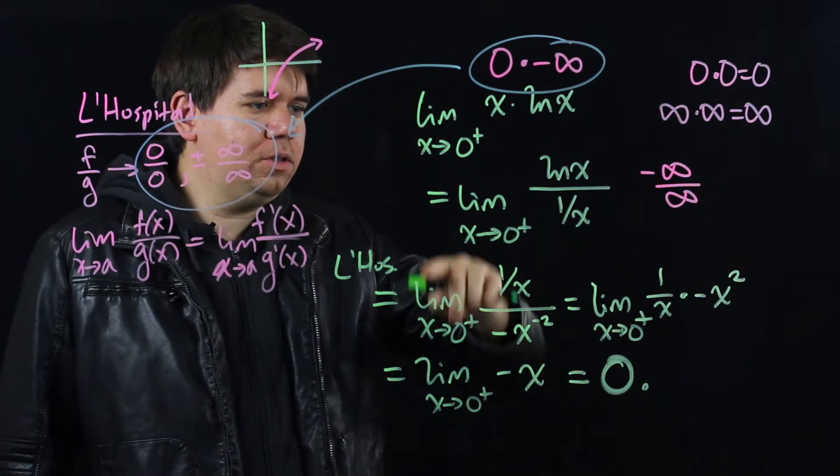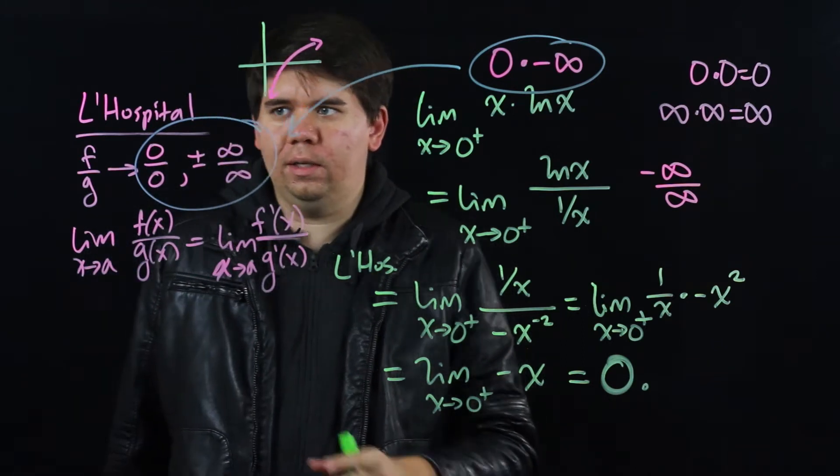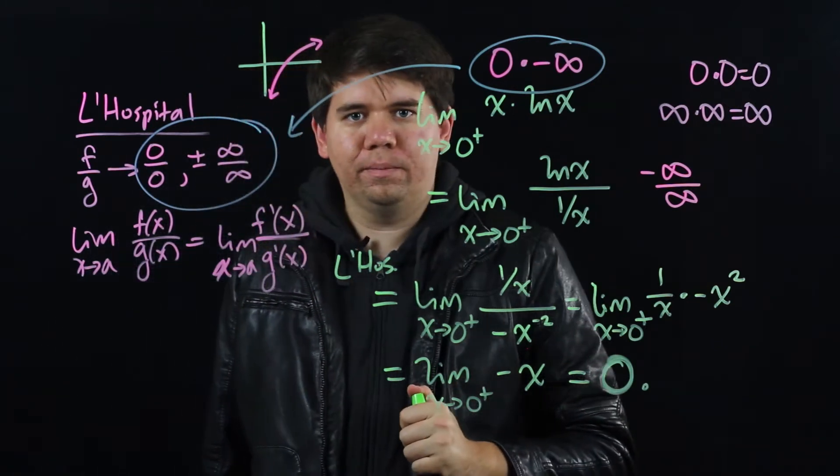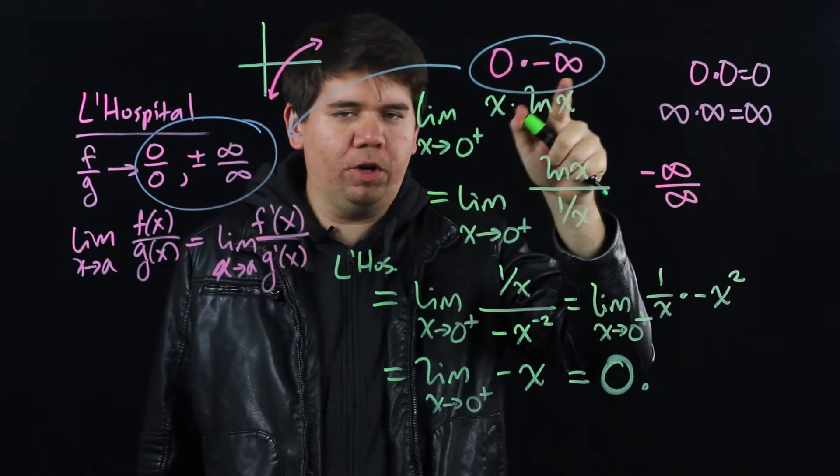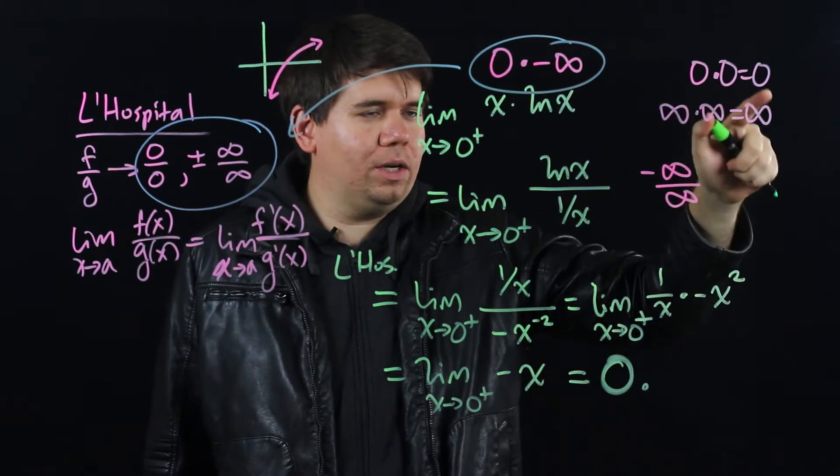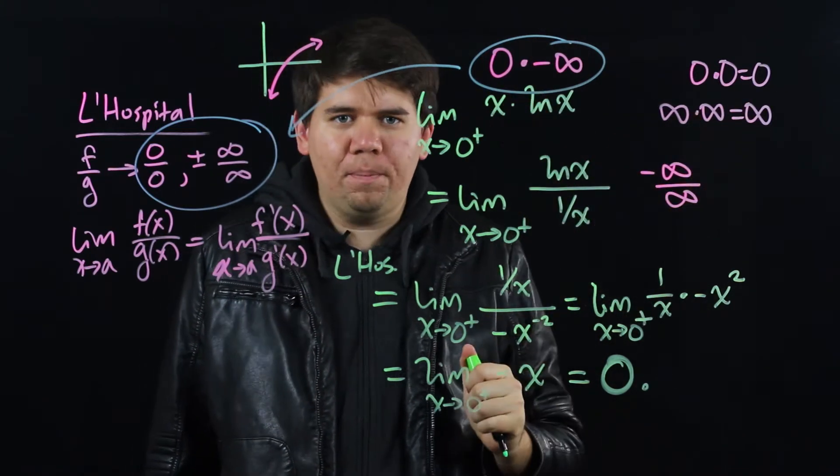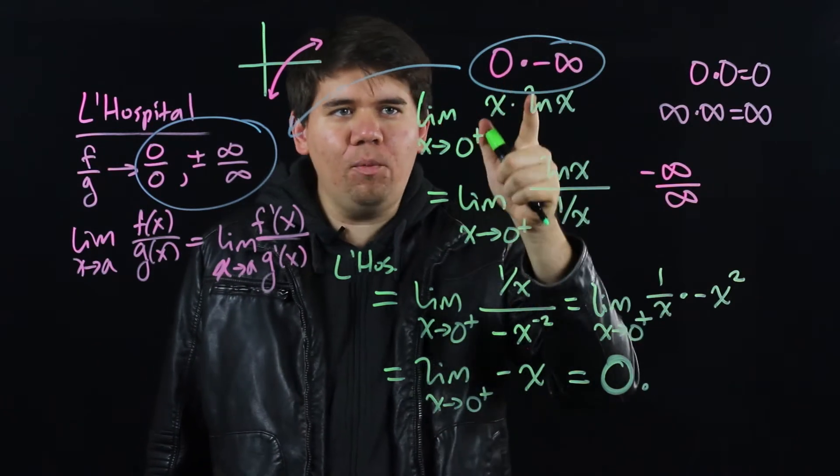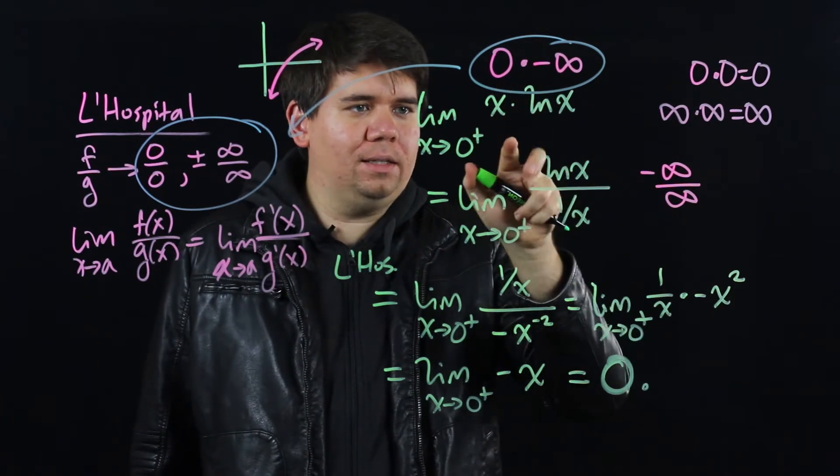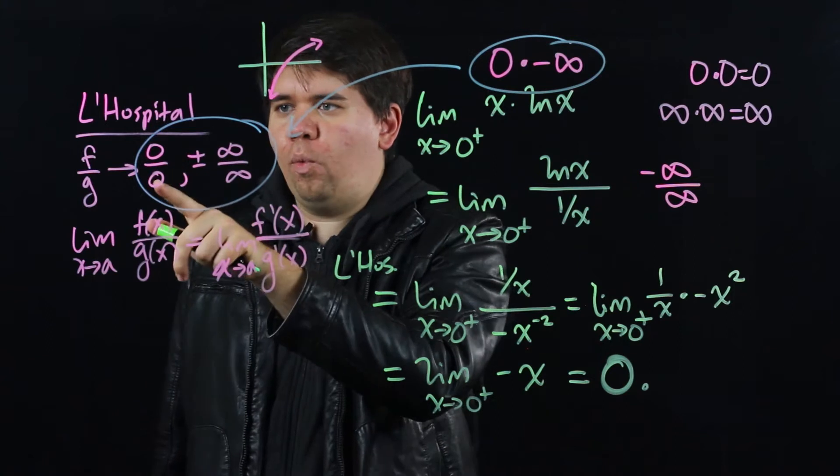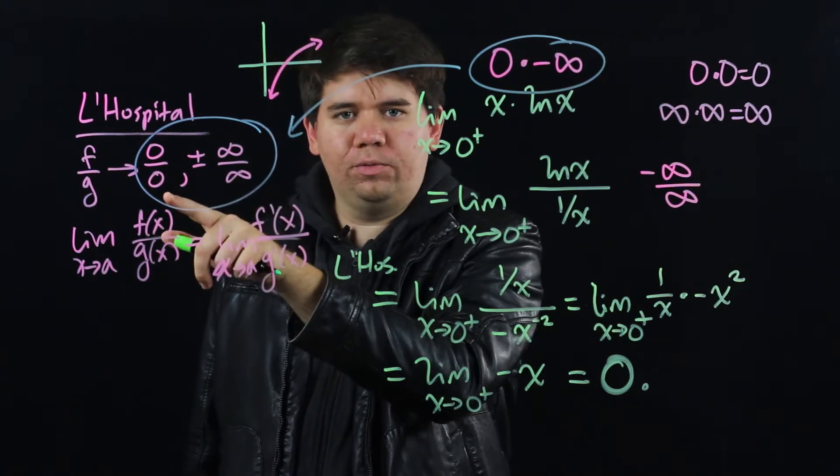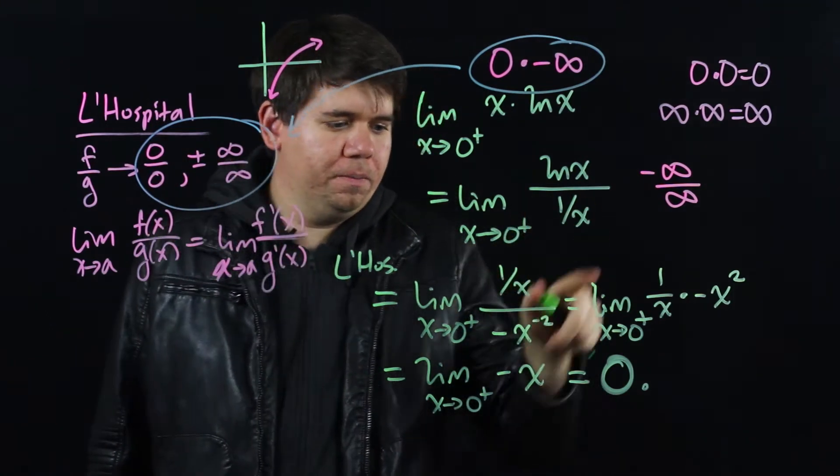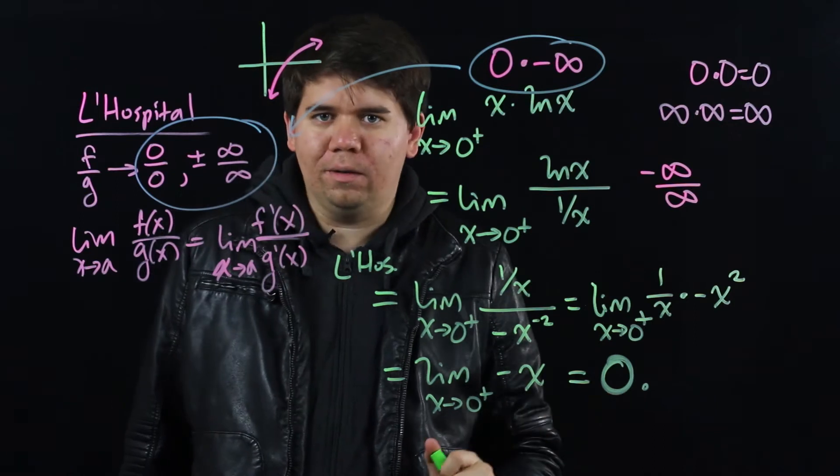Hence, we're able to solve the limit using L'Hopital's rule. Again, whenever you get some indefinite form, some form where it's not clear what it should be, 0 and infinity competing with each other, find some way to manipulate the limit to make it of one of the forms permitted by L'Hopital's rule. Then apply the rule until you get down to your final solution.